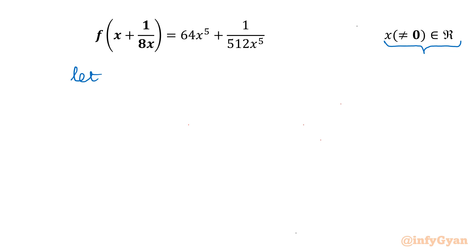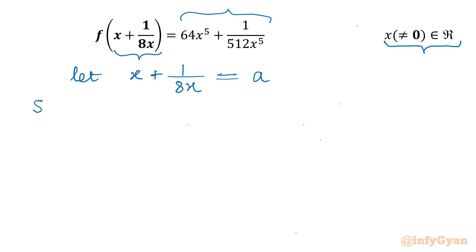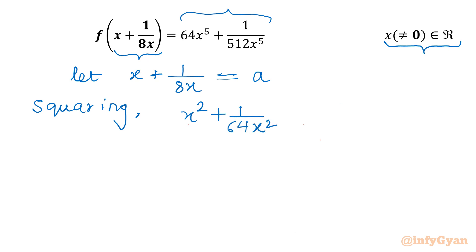Here I will consider x + 1/8x, and let us set this value equal to a. Now I will find out our RHS in terms of a, because the LHS is f(a) now. I will consider squaring both sides. This will become x² + (1/8x)² — that is 1/64x² — plus 2·x·(1/8x), and the right-hand side will be a².